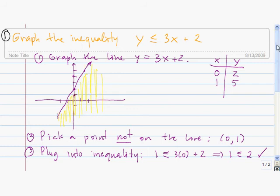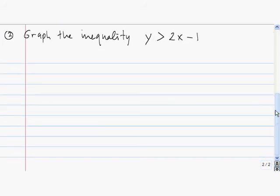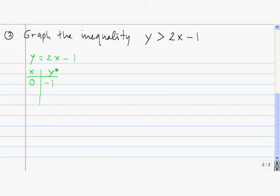Let's do another example. Just like before, we're going to start by graphing the line y equals 2x minus 1, and we'll graph this line by getting two points on the line. The first point, using x equal to 0: y is equal to 2 times 0 minus 1, which is negative 1. The next point, using x equal to 1: y is equal to 2 times 1 minus 1, so 2 minus 1 is 1.